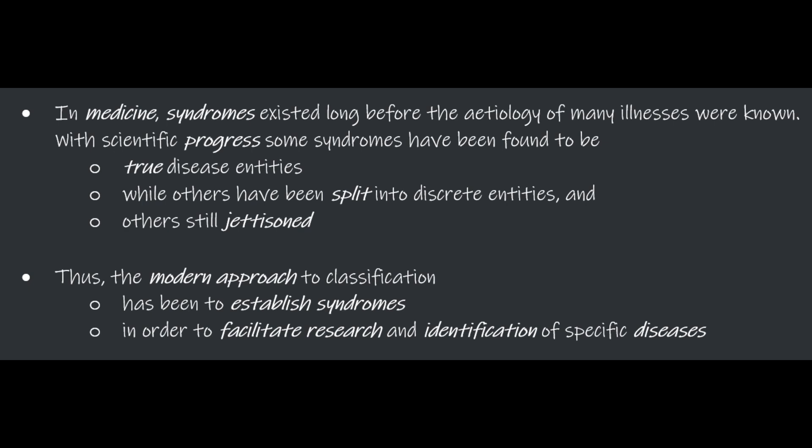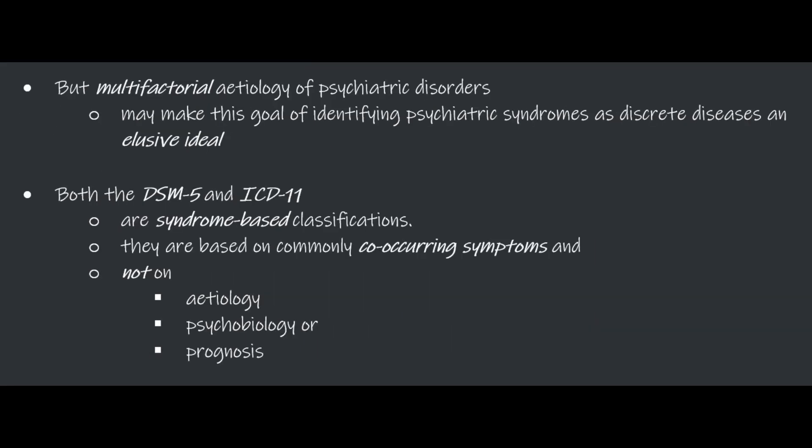Chapter 1: Classification of Psychiatric Disorders. In medicine, syndromes existed long before the etiology of many illnesses were known. With scientific progress, some syndromes have been found to be true disease entities, while others have been split into discrete entities, and others still jettisoned. The modern approach to classification has been to establish syndromes in order to facilitate research and identification of specific diseases. But the multifactorial etiology of psychiatric disorders may make this goal of identifying psychiatric syndromes as discrete diseases an elusive ideal. Both DSM-5 and ICD-11 are syndrome-based classifications, i.e. they are based on commonly co-occurring symptoms and not on etiology, psychobiology, and prognosis.